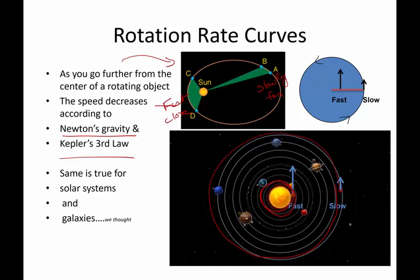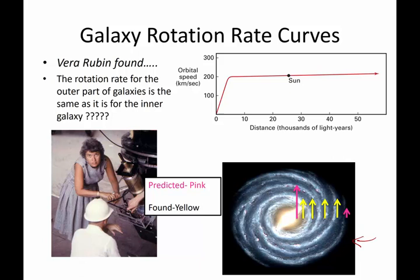So, everything we know about physics has told us that near the center, things should move fast, and near the outside edges, things should move slowly. Vera Rubin said by studying that for galaxies, this should be non-controversial because everybody knew what was going to happen. The things in the center would be fast, and the things on the outside edge would be slow. But that's not what she found.